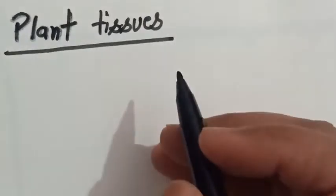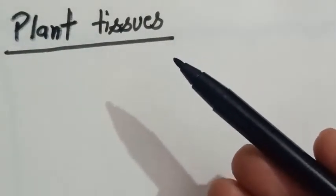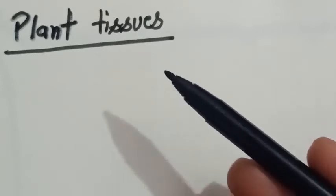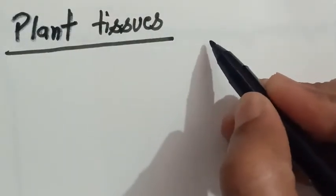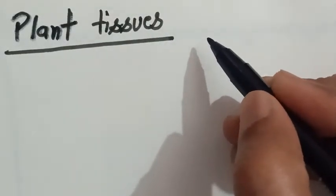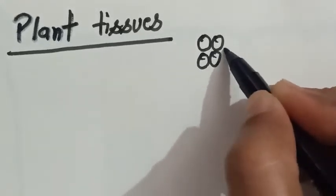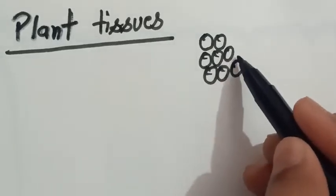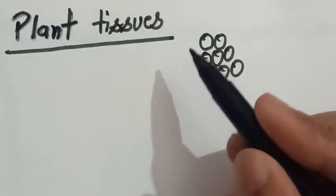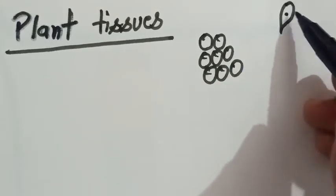Good morning students. In this video I'm going to start the explanation of the next topic, that is plant tissue. Before starting, we should know what tissues are. Simply, tissues are the group of cells having similar structure and performing the same function.